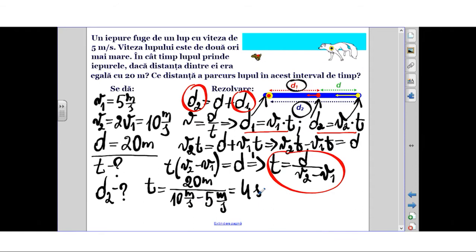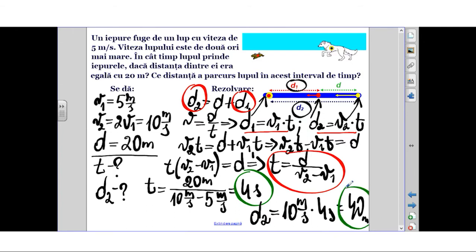In this expression we substitute numerical values: time equals distance 20 m divided by V2 minus V1, which is 10 m/s minus 5 m/s. Finally we obtain 20 divided by 5 equals 4 seconds. So 4 seconds is the answer to the first question. The time after which the wolf catches the rabbit is 4 seconds. Distance d2 we can now calculate using its expression: V2 times t. Velocity V2 equals 10 m/s, time equals 4 seconds. Thus we obtain 40 m. This is the answer to the second question.